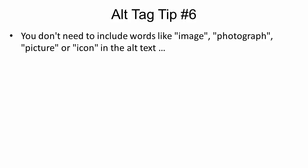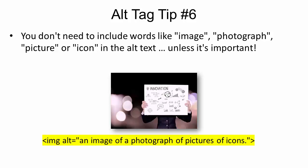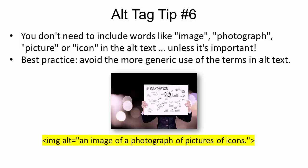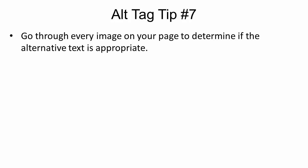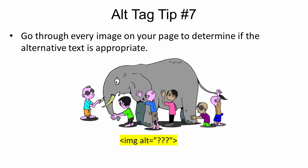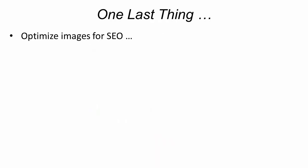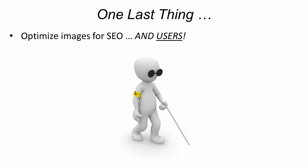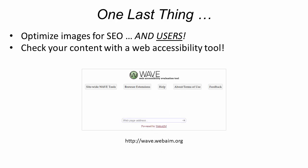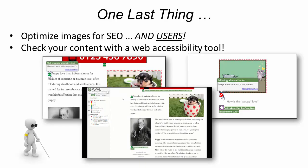Number six: you don't need to include words like 'image,' 'photograph,' 'picture,' or 'icon' in the alt text, unless it's important. The best practice is to avoid the more generic use of these terms in alternative text. And our last tip: go through every image on your page to determine if the alternative text is appropriate — imagine reading the page aloud to someone who is visually impaired and needs to understand your content. Optimizing images for search engines is important, but optimizing images for your readers is vitally important, especially users with visual impairments or learning disabilities. Once you have finished creating your web content, make sure to run it through a web accessibility tool. This will help ensure that your content and your website is inclusive and accessible to everyone. Thanks for watching.